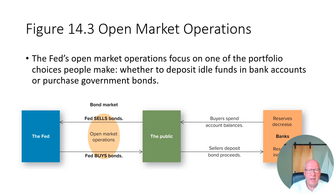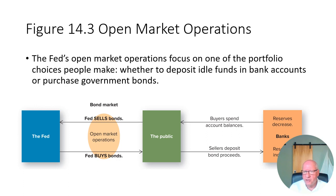Here's a diagram of the process. On the far left is the Federal Reserve. In this example the Fed is selling a bond. The diagram shows the cash flow: cash comes from the public, who get it from their bank balance. As cash flows from the bank and the public uses it to buy the bond from the Fed, the reserves at the bank go down. Vice versa: if the Federal Reserve buys a bond, cash flows from the Fed to the public, the public deposits it in the bank, and bank reserves rise.